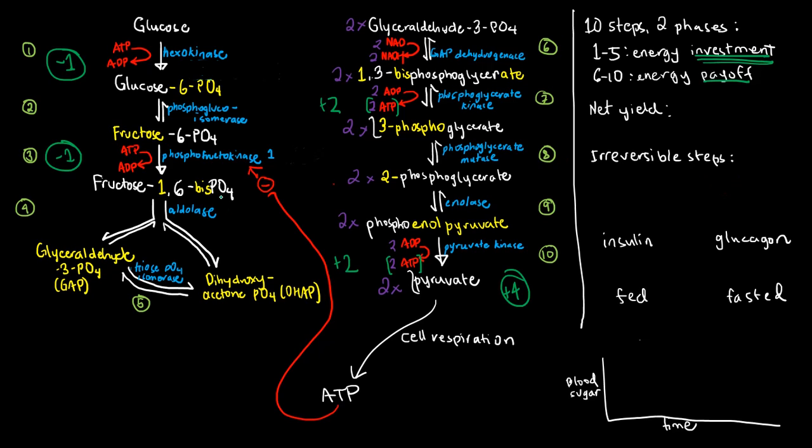So, technically speaking, the fact that you have here a net positive yield, right, if we add everything, minus one plus minus one is minus two, minus two plus four is positive two. So, that means that you are able to produce two ATP after the ten steps here have taken place.